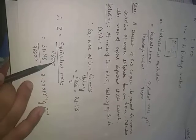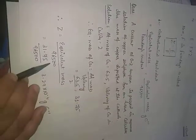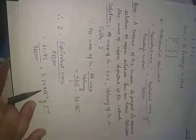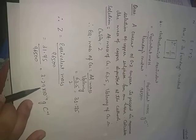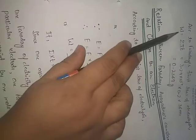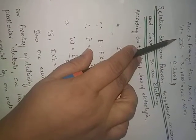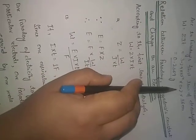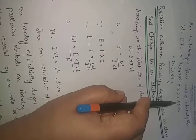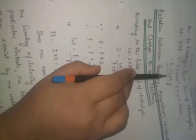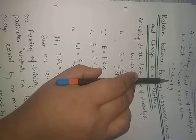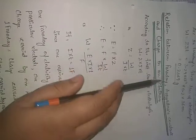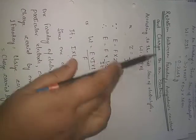Therefore Z = equivalent mass / 96500 = 31.75 / 96500, which gives Z = 3.29 × 10⁻⁴. Using Faraday's first law, W = Z×I×T, where Z is calculated, I = 0.2 ampere, and time = one hour converted to seconds. This gives the mass of copper deposited.